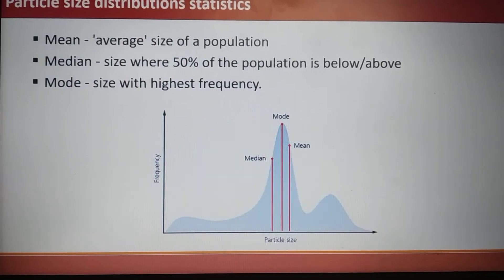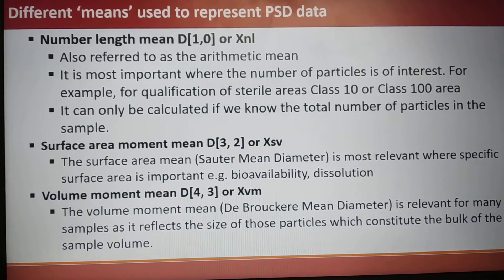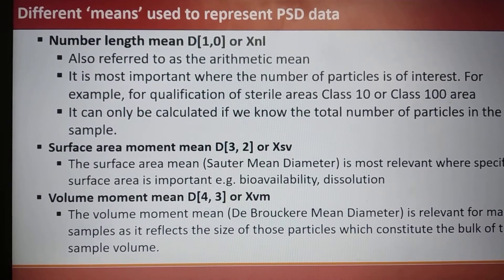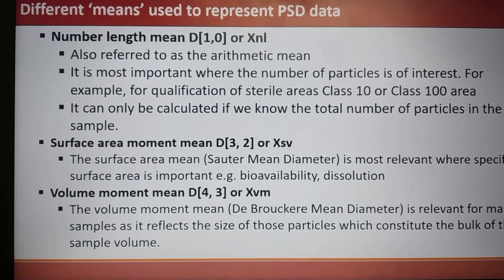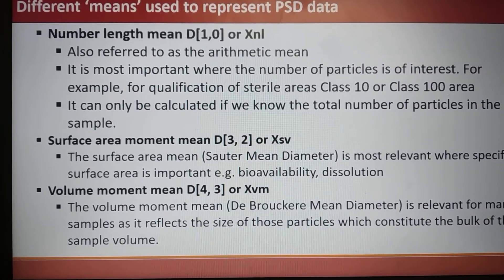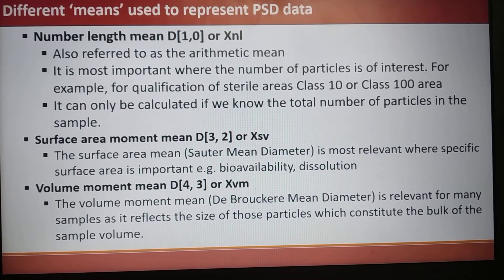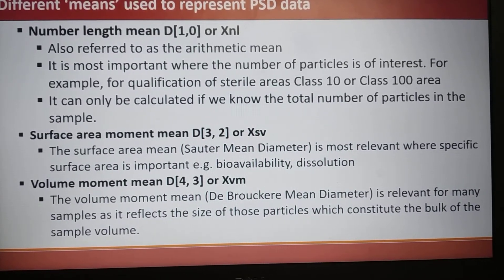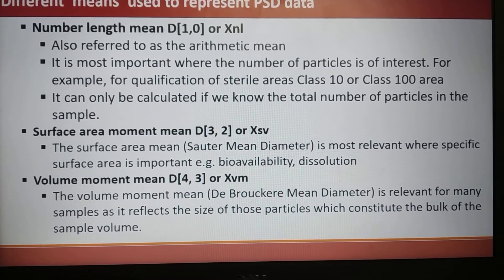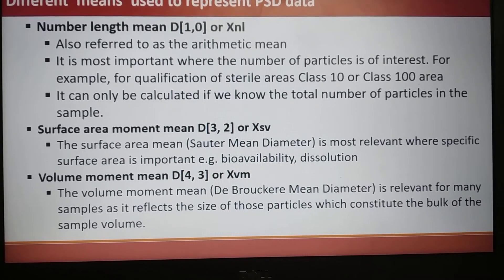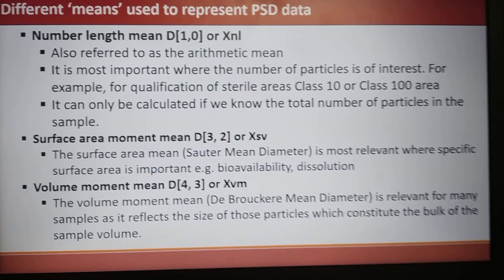There are different ways to represent the means which represent PSD data. First one is the number length mean D[1,0] or Xnl. This is also referred to as the arithmetic mean. It is most important where the number of particles is of interest, and it can be measured only if the total number of particles in the sample is known. This has application in qualification of sterile areas where Class 10 or Class 100 areas are being qualified.